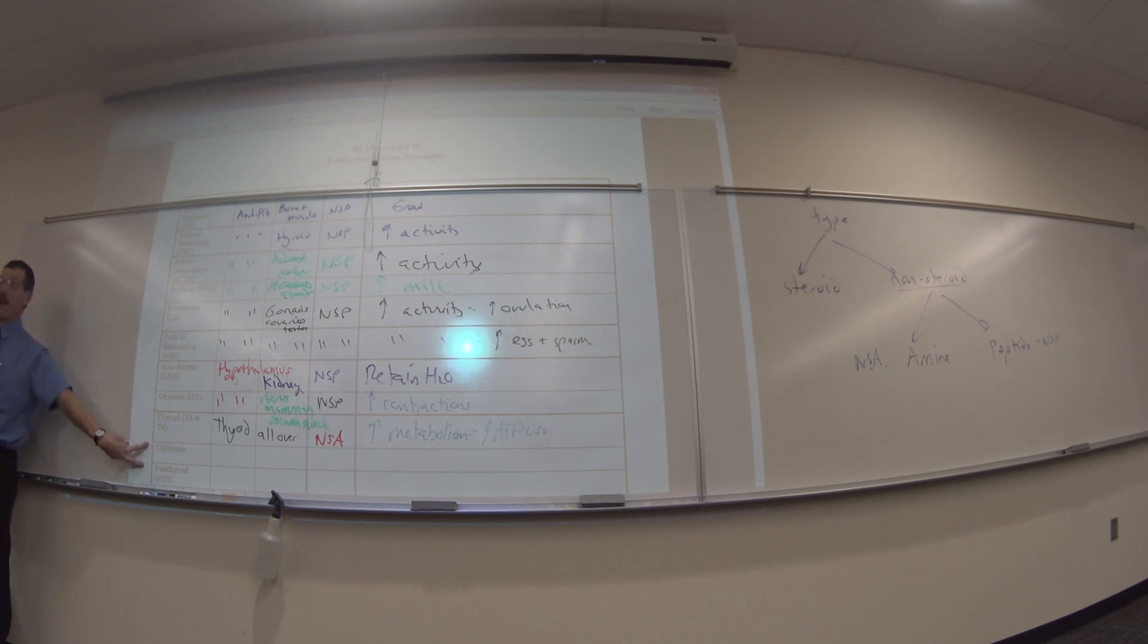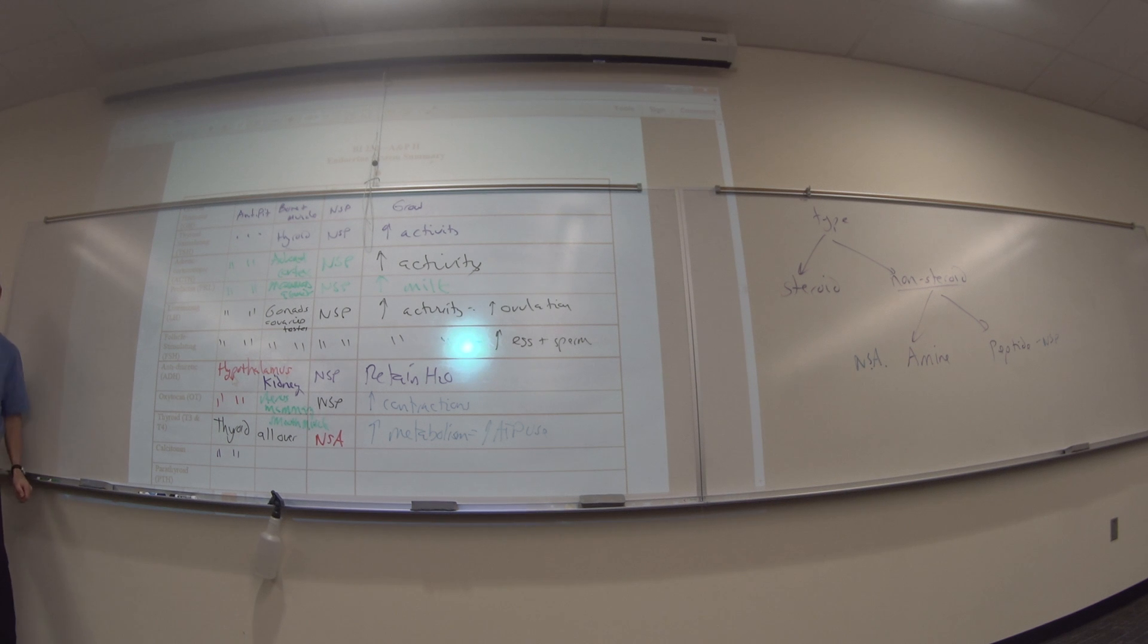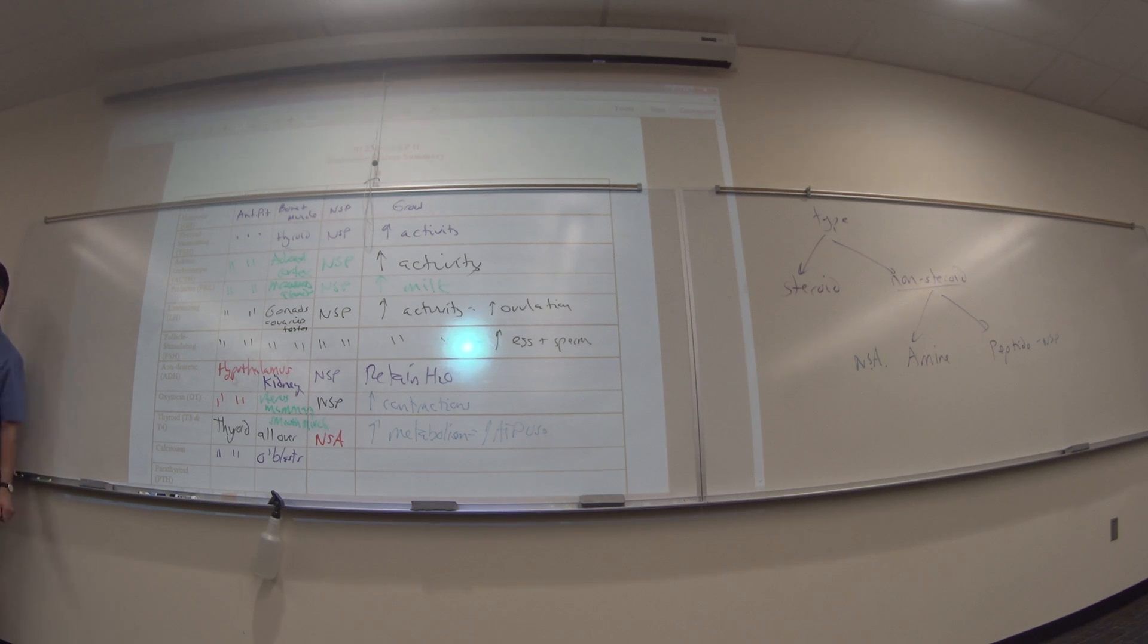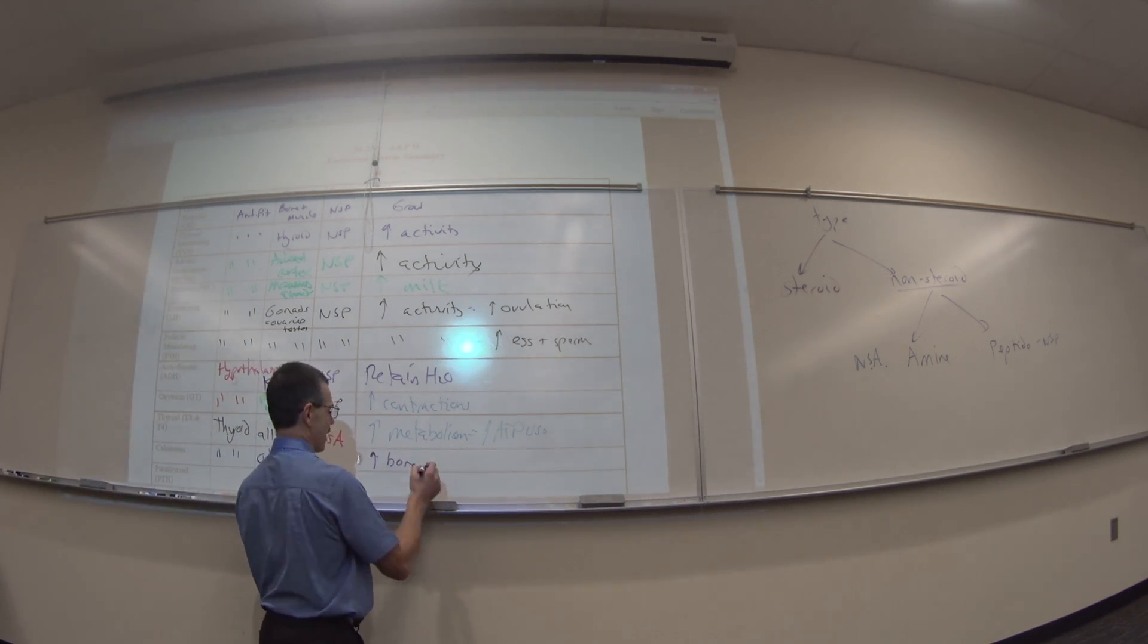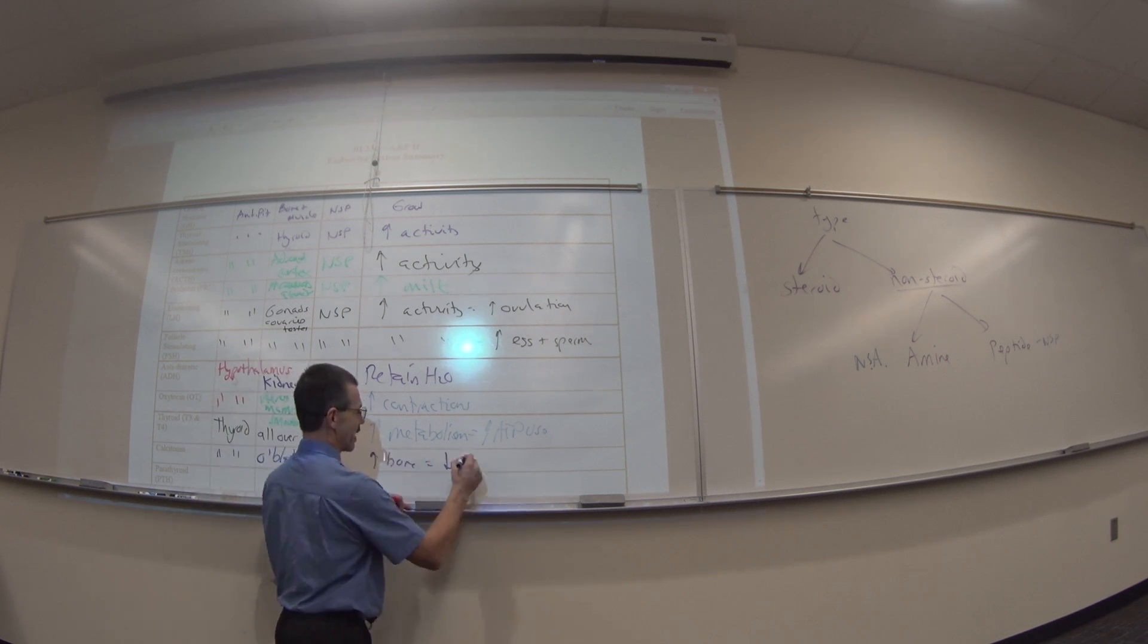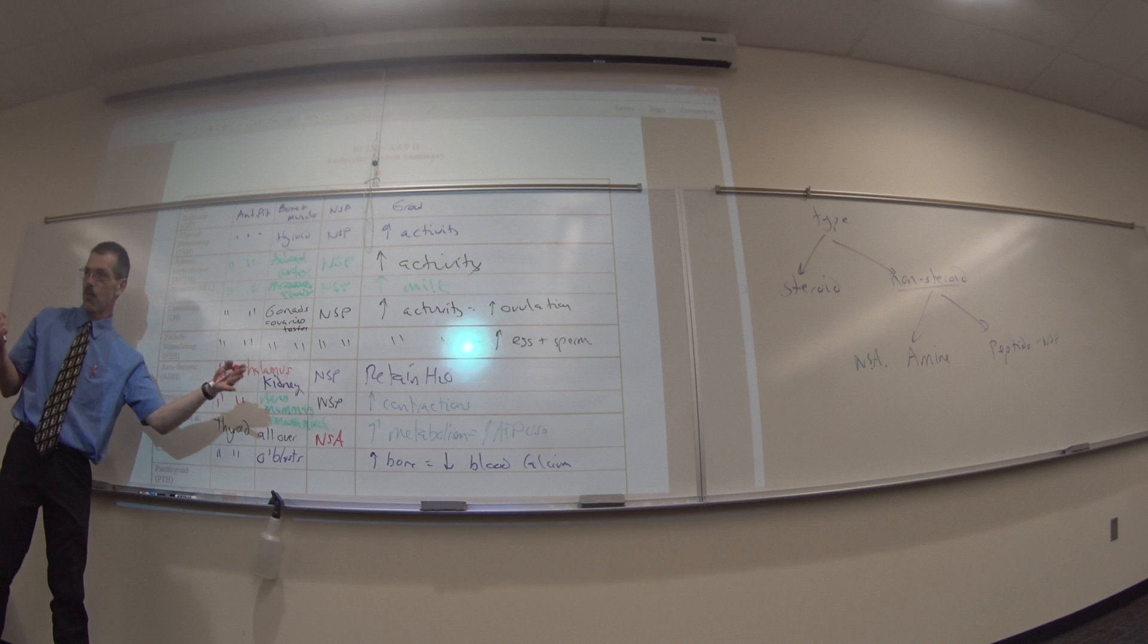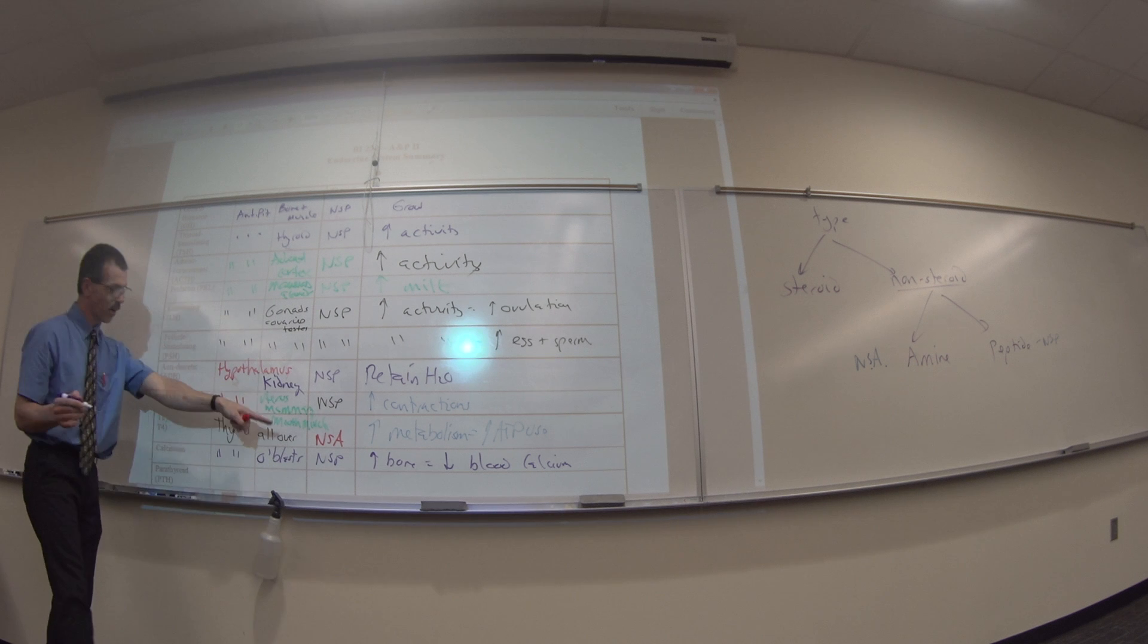Calcitonin made where? Thyroid gland. What does calcitonin target? Be more specific. Osteoblast. And what do osteoblasts do? Make bone. So I'm going to increase bone. Also known as decrease blood calcium. So remember that you can build bone by taking it out of your blood. So depending on what you read, some will refer to the blood, some will refer to the bone. But they're both the same thing. What type is it? This happens to be an NSP.